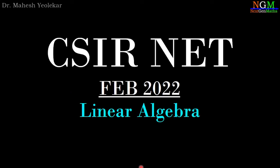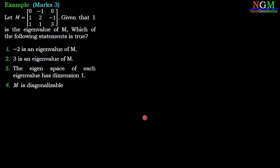In this video we are going to discuss the problem CSI N8-522 of linear algebra. The question is: let M be a 3×3 matrix with entries [0, -1, 0; 1, 2, -1; 1, 1, 3]. Given that 1 is an eigenvalue of M, which of the following statements is true?